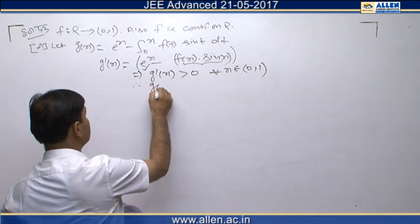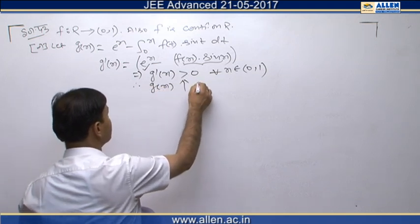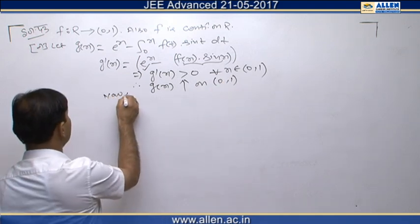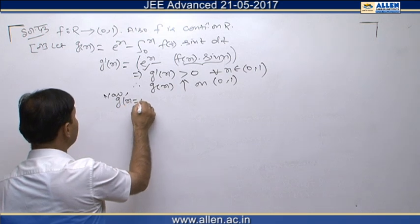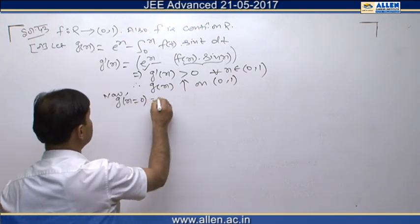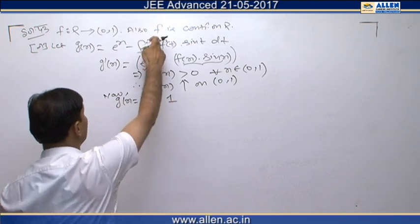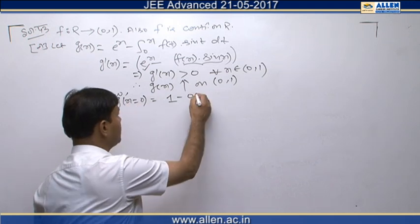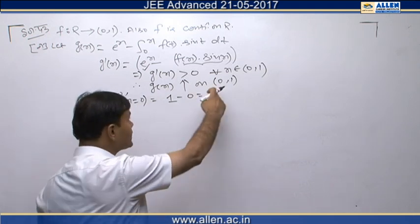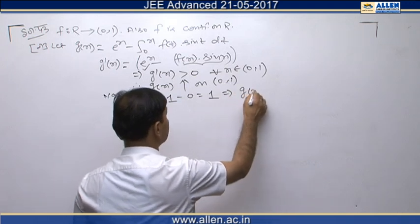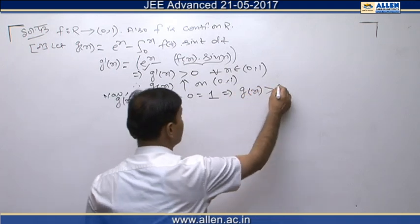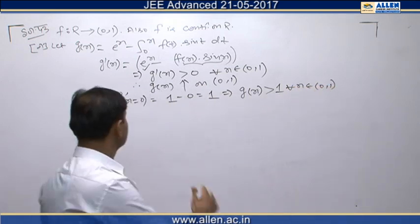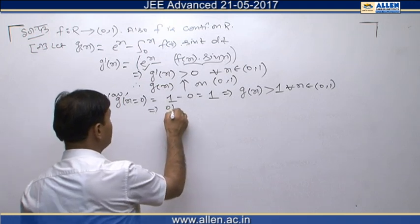This means g(x) is strictly increasing on (0,1). At x = 0, the first term is e^0 = 1 and the integral becomes 0 (same lower and upper limit), so g(0) = 1. Since g is increasing on this interval, g(x) will be greater than 1 for every x in (0,1). So option A is not possible.